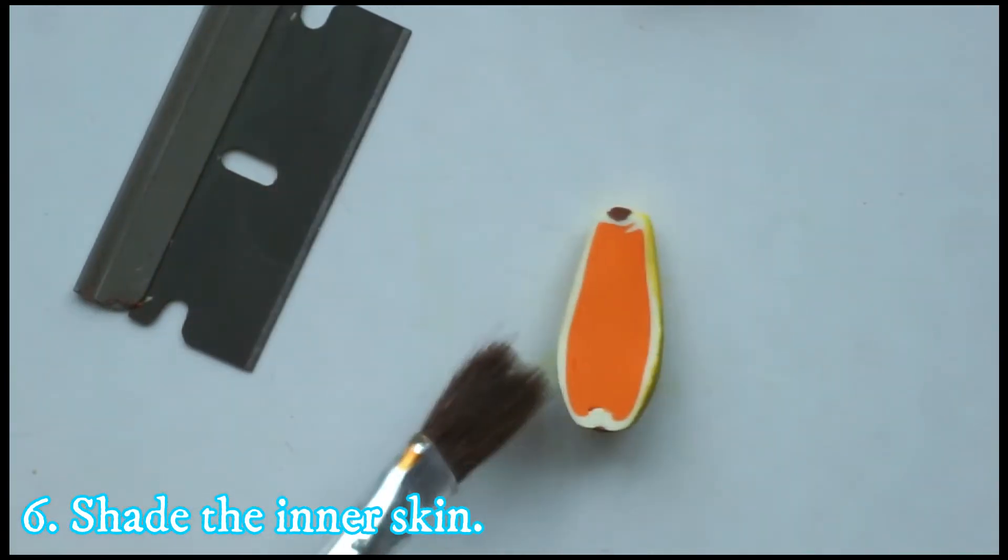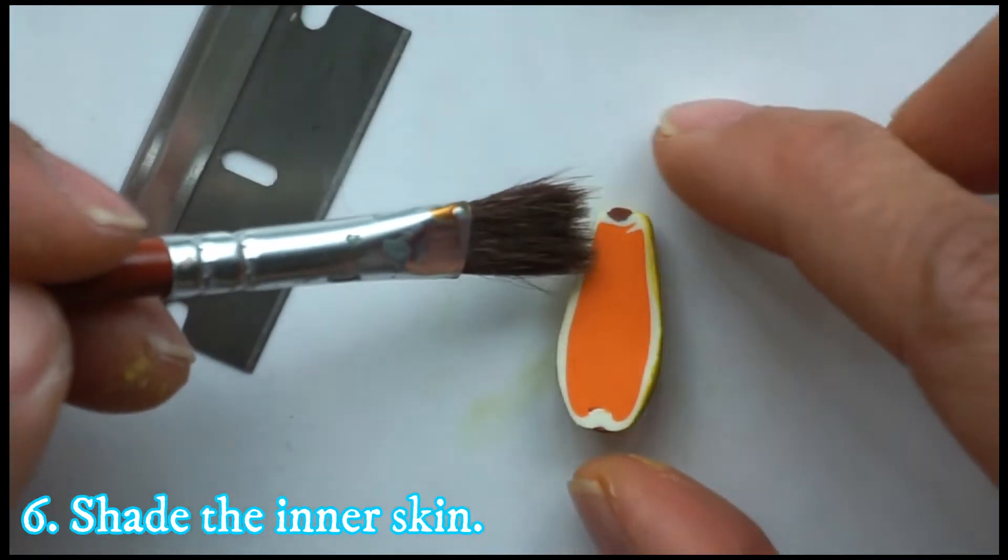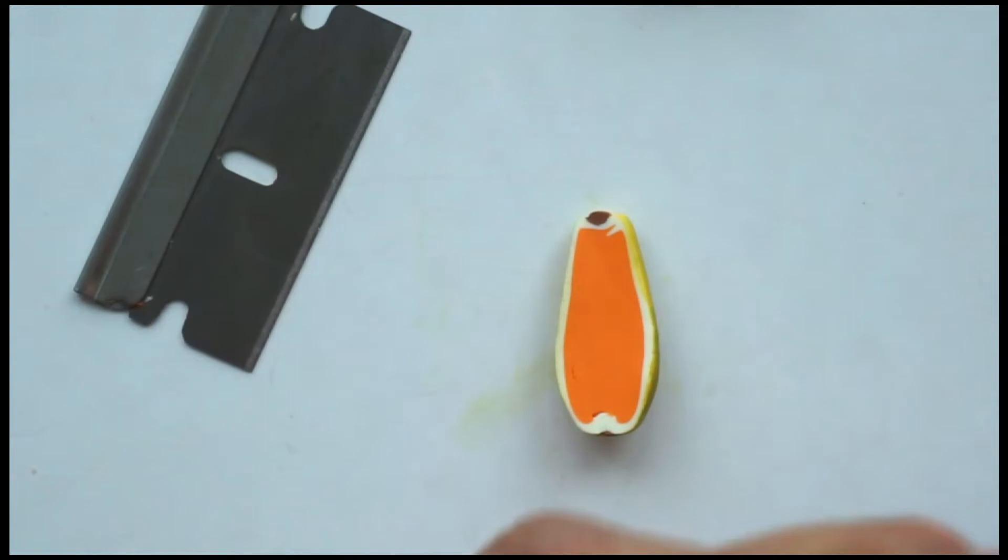And then next, shade the sides of the papaya with a light yellow chalk pastel.